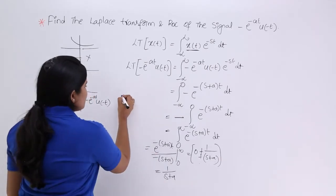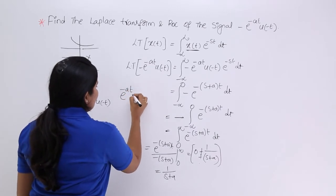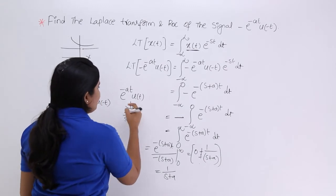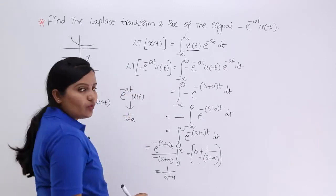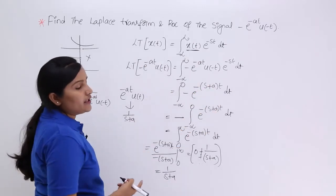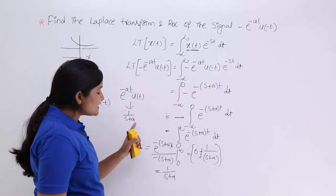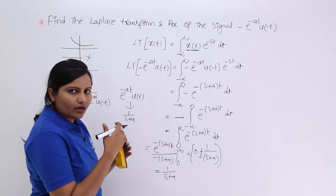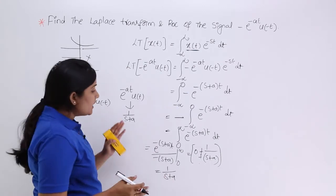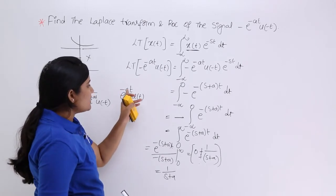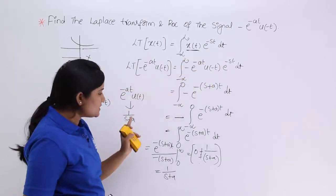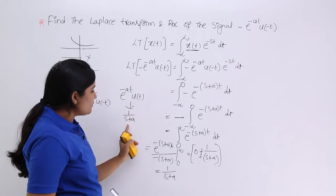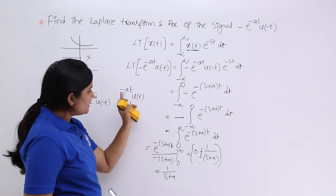So the Laplace transform of minus e power minus at, u of minus t is 1 by (s plus a). Previously, for e power minus at, u of t, you also got the same transform 1 by (s plus a). So both e power minus at u(t) and minus e power minus at u(minus t) have the same Laplace transform. The only difference is in the ROC — the region of convergence.